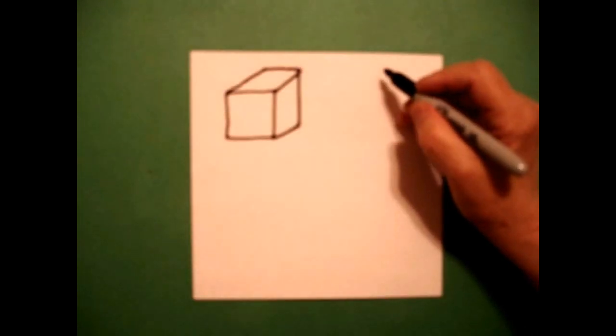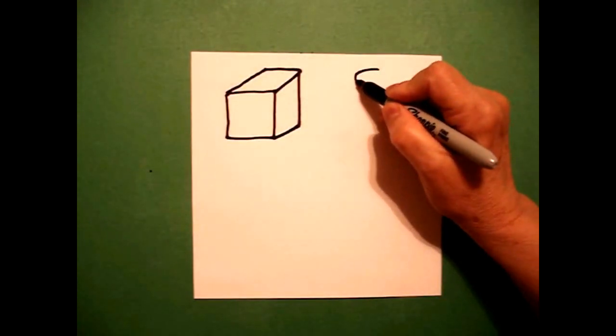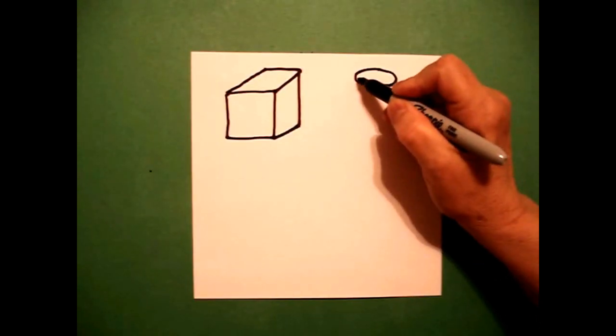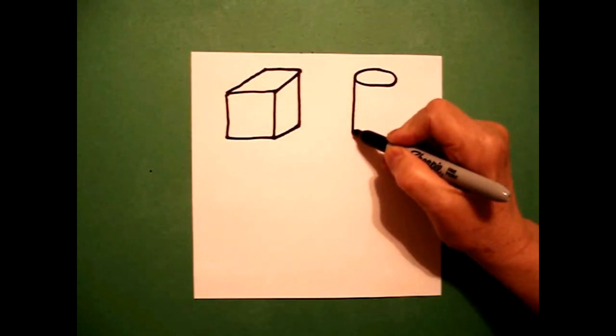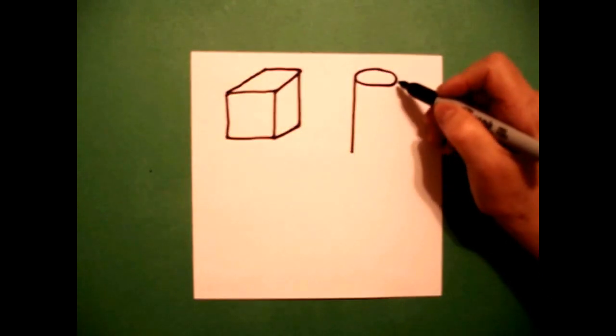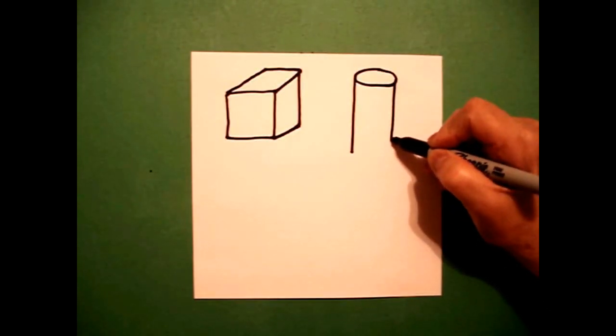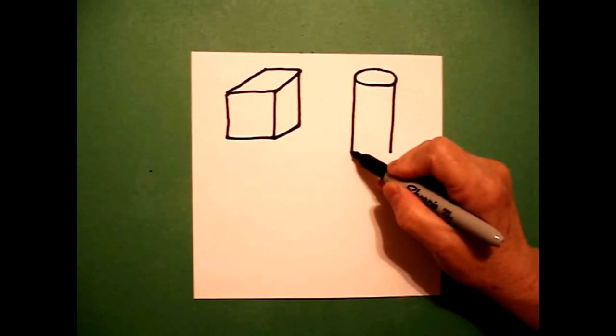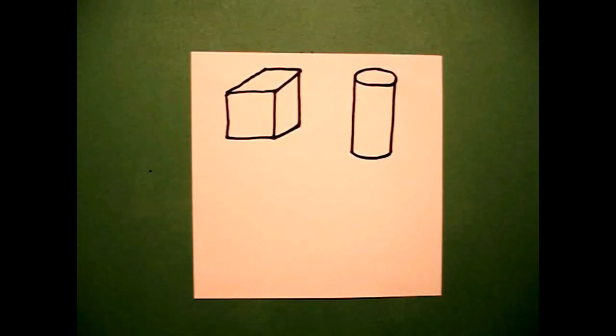I come over here on the right and I'm going to draw a flat oval. I come on the left and draw a straight line down, come on the right, straight line down, curve line at the bottom. That's a cylinder.